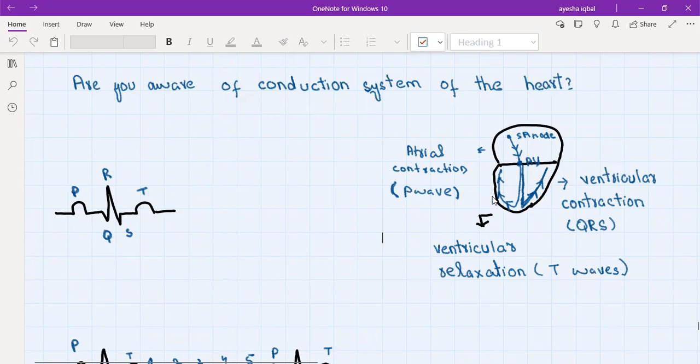Then the ventricle contracts and pushes the blood out of the heart. Once the ventricles have contracted and the blood has been pushed out of the heart, then the ventricle relaxes and this produces the T wave which is said to be due to ventricular repolarization. So we get this PQRST and these are repeated throughout the ECG again and again. So this is the basic unit for an ECG.